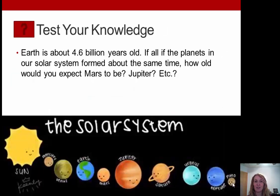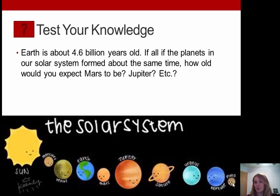Let's test our knowledge. Earth is about 4.6 billion years old. If all the planets in our solar system formed at about the same time, how old would you expect Mars to be? Probably about the same — roughly 4.6 billion years old. Same with Jupiter, same with anything else forming in our solar system. It can be a little more or less. My image does have Pluto on there, but I'm old school — Pluto is always going to be a planet to me.